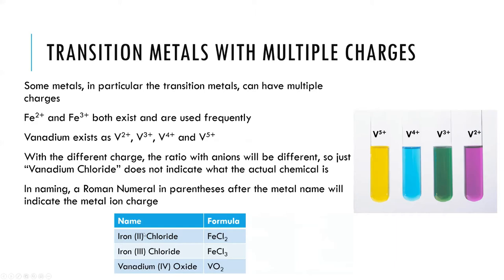Iron(II) chloride means it's using the Fe2+ ion; iron(III) chloride indicates it's using the Fe3+ ion. The Roman numeral tells you the actual charge of the transition metal. Because iron(II) is a 2+ charge and chloride is 1-, there need to be two chlorides to balance that out. With iron(III), there need to be three chlorides. In vanadium(IV) oxide — VO2 — the vanadium is in the 4+ state. Each oxygen is 2-, so two oxygens give 4- total, balancing the 4+ from vanadium.